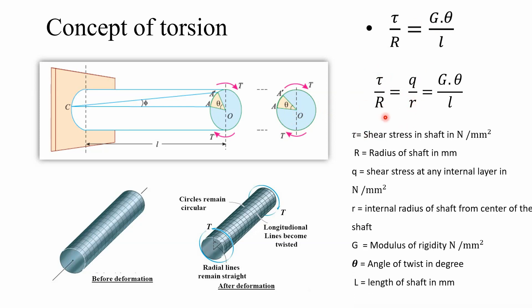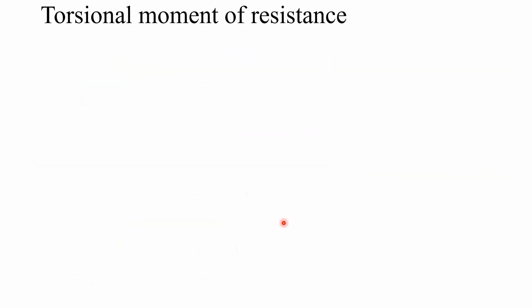In the torsional formula: tau is shear stress in the shaft in N/mm²; R is the radius of shaft in mm; q is the shear stress intensity at any internal layer in N/mm²; r is the internal radius from the center; G is the modulus of rigidity in N/mm²; theta is the angle of twist in degrees; and L is the length of the shaft in mm. Now let us discuss the torsional moment of resistance.